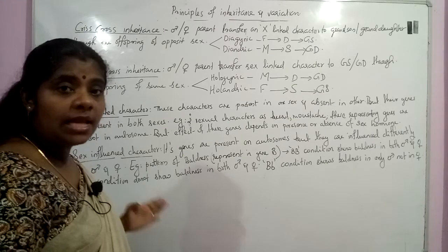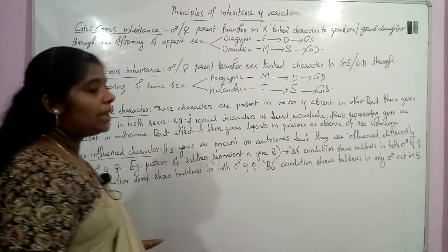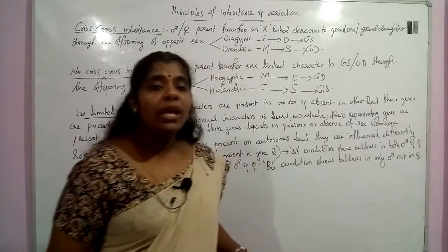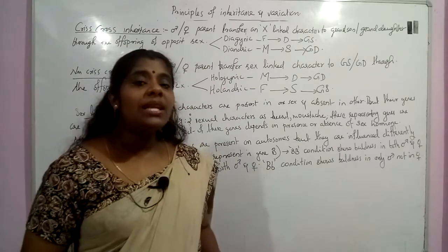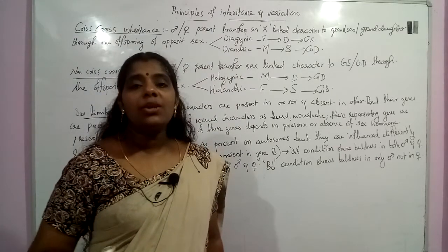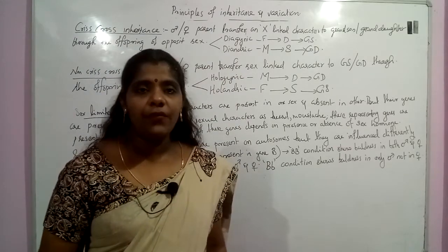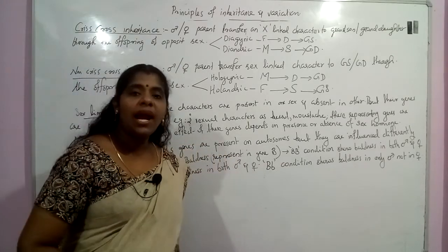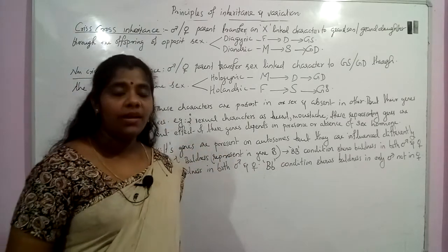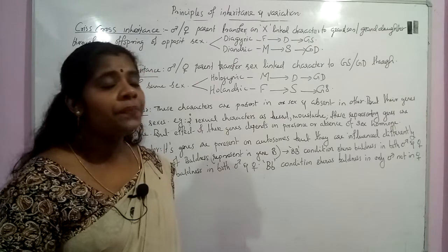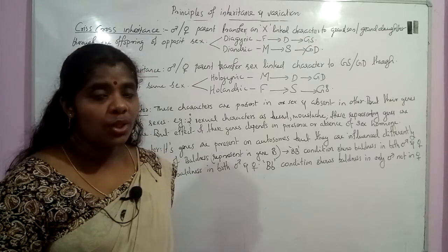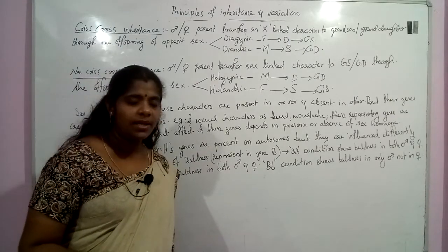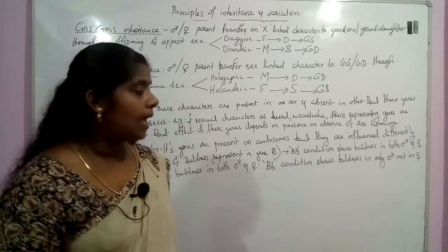In the capital B small b condition, the capital B allele shows dominancy in the case of male, but it is not showing dominancy in the case of female. So the capital B gene shows dominance in males but not in females because of the hormonal environment. Therefore, we say it is a sex-influenced character.